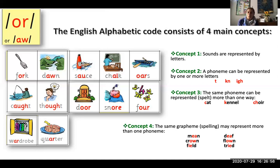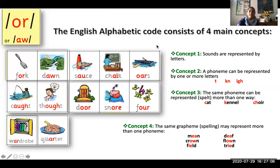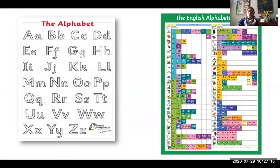Crown or flown, field or tried. So as you see, the English alphabetic code is a real complex code and it all comes with the alphabet.